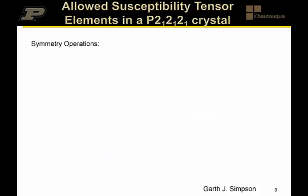Let's consider the P212121 crystal. What tensor elements are allowed in a crystal of P212121 symmetry? The 21 refers to 180-degree rotation along with a translation, and the translation is small relative to the wavelength of light — on the order of the lattice constant — so it's really that 180-degree rotation that we care about in terms of the optics. The 212121 corresponds to a rotation and translation about x, y, and z coordinates. In terms of point group operations, we can think of that 21 screw axis as being a C2 effectively about the x-axis, with a C2 about y, and a C2 about z. Those are the three symmetry operations present in terms of the optics in a P212121 crystal.